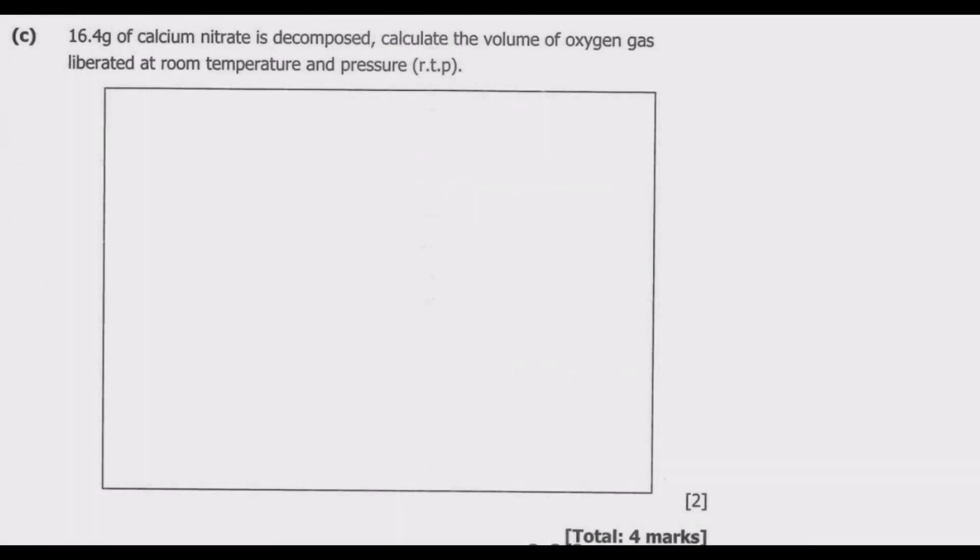Question C. 16.4 grams of calcium nitrate is decomposed. Calculate the volume of oxygen gas liberated at room temperature. The question is asking us to find the volume of oxygen liberated. The first thing that we need to do is we need to find the number of moles in this calcium nitrate.